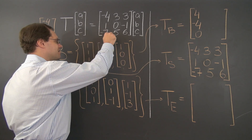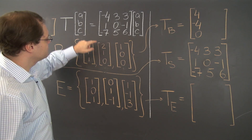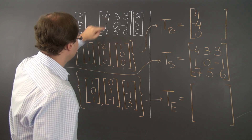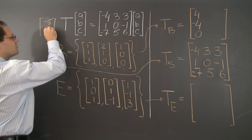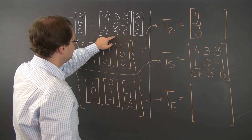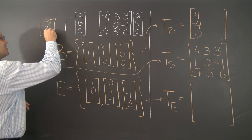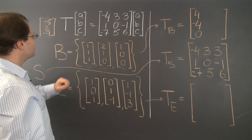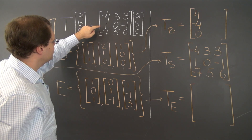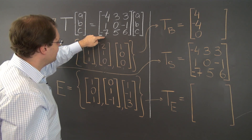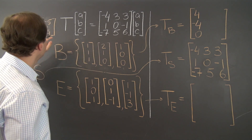Now for column 2, apply the same linear transformation to the second basis vector. We get: minus 8 plus 3, minus 5; 2 plus 0, 2; minus 14 plus 5, minus 9. So the result is (-5, 2, -9).